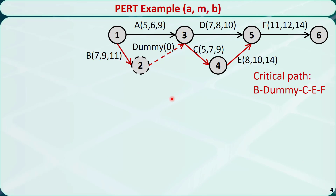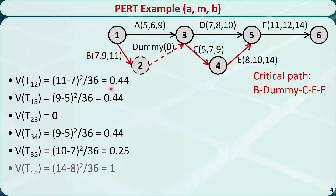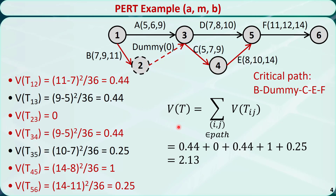Now let's calculate the variance of the duration for activity B: 11 minus 7, squared, divided by 36, which is 0.44. Following the same procedure, we can find the variance values of durations for all other activities. The variance for the dummy activity is always 0. The variance of the duration of the critical path can be calculated by adding up all the variance values of the activities on the critical path. It is equal to 2.13.